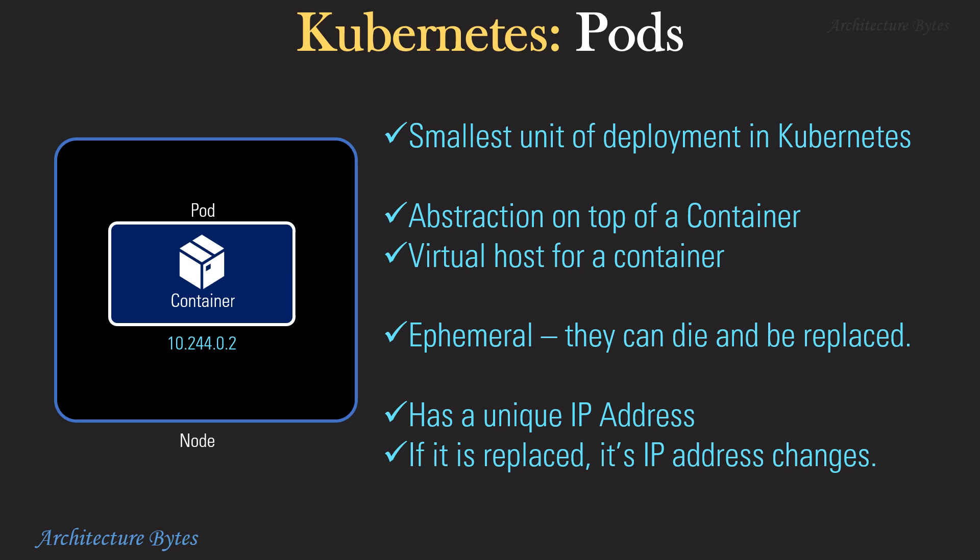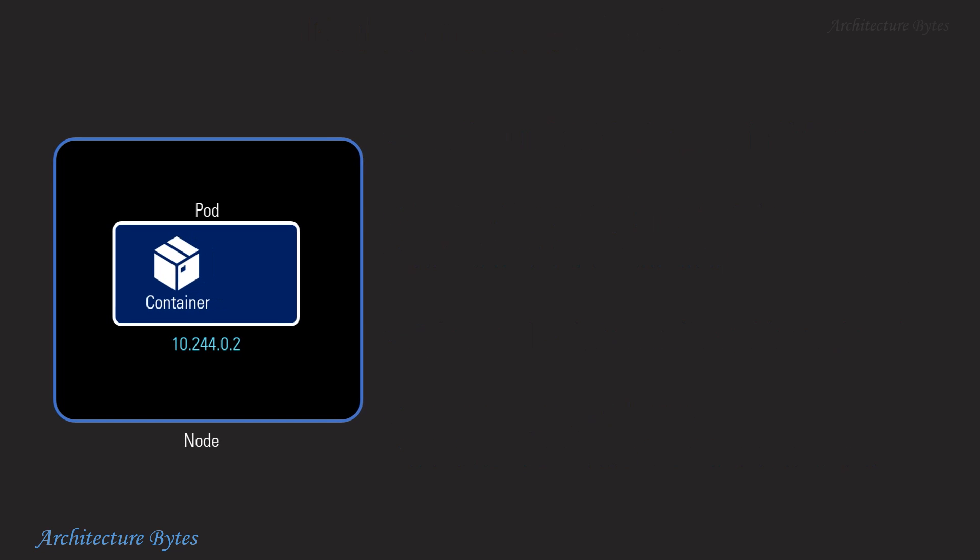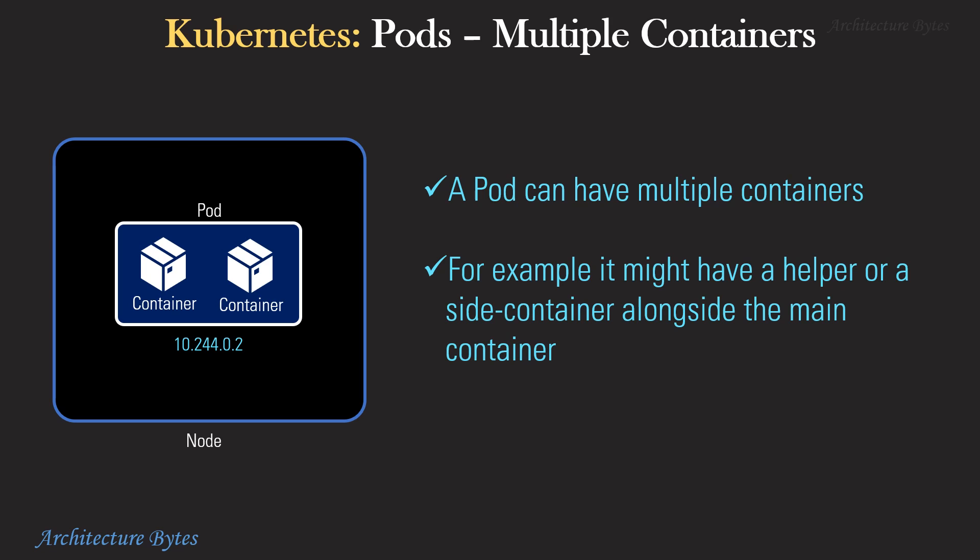What are Kubernetes pods? A pod is the smallest unit of deployment in Kubernetes. It is an abstraction on top of a container and therefore a virtual host for a container. Pods are ephemeral — they can die and be replaced. A pod has a unique IP address and if it is replaced, its IP address changes. A pod can have multiple containers; for example, it might have a helper or sidecar container alongside the main container.